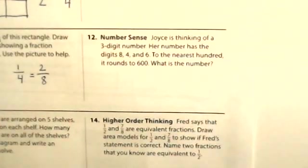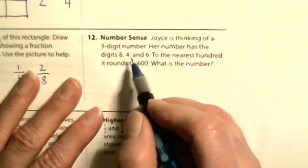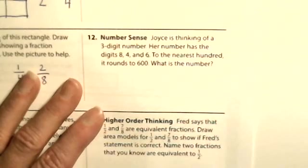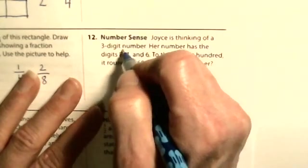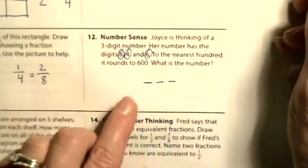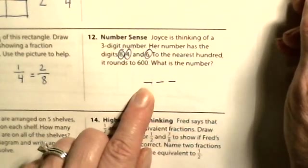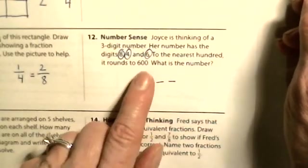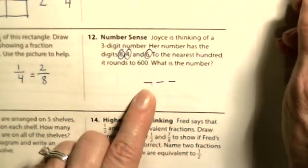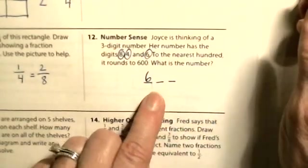Number sense: Joyce is thinking of a three-digit number. Her number has the digits 8, 4, and 6. To the nearest hundred, it rounds to six hundred. We need to figure out which digit goes in the hundreds place. Could 8 be in the hundreds? No — that rounds to 800 or 900. Could 4? No — it would round to 400 or 500. So 6 must be in the hundreds. If we put 4 in the tens place, this rounds down to 600. The number is 648. Six-forty-eight is between 600 and 700; since 648 is less than 650, it rounds to 600.